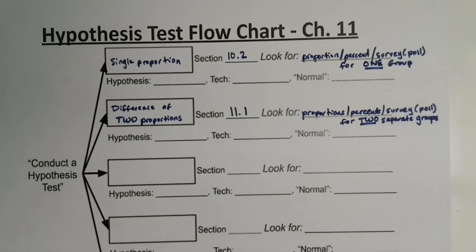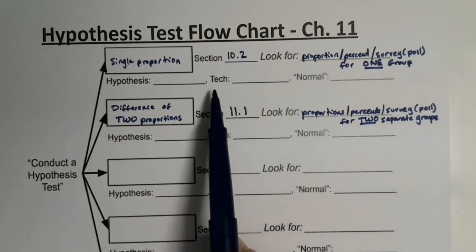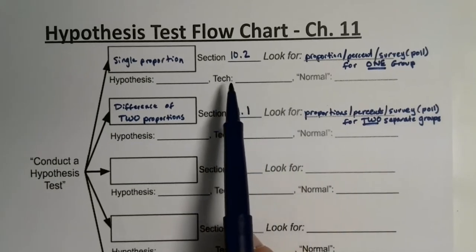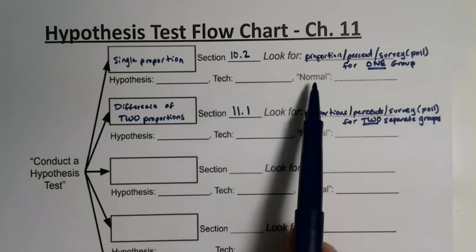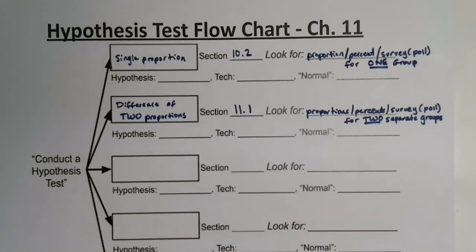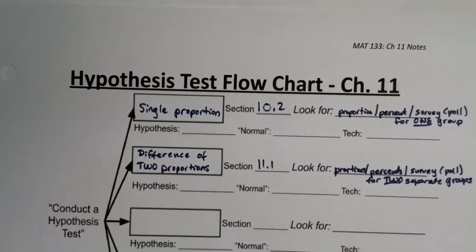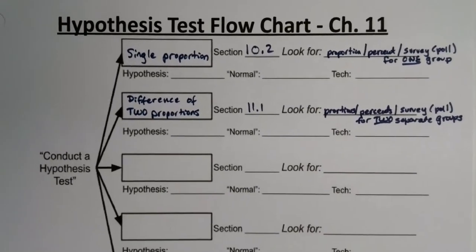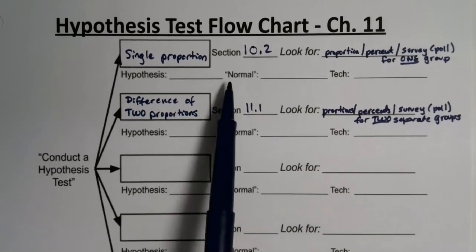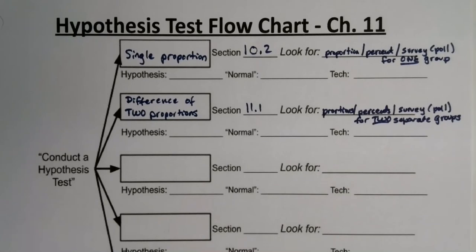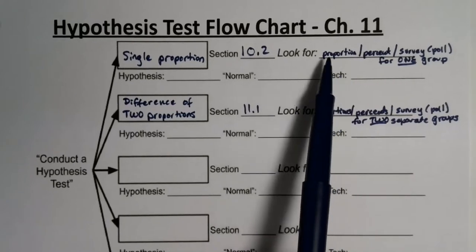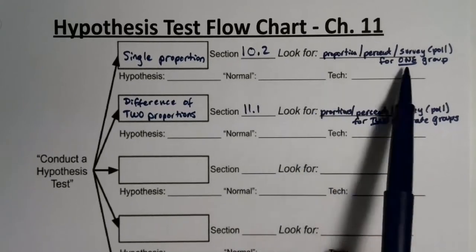I just realized I have these backwards again — the tech section is going to take more space than the normal section. Rather than smudging it like I did on the confidence interval one, I'm just going to redo it so that it says 'normal' here and 'tech' here. I've already changed it in the electronic file, sorry about that.